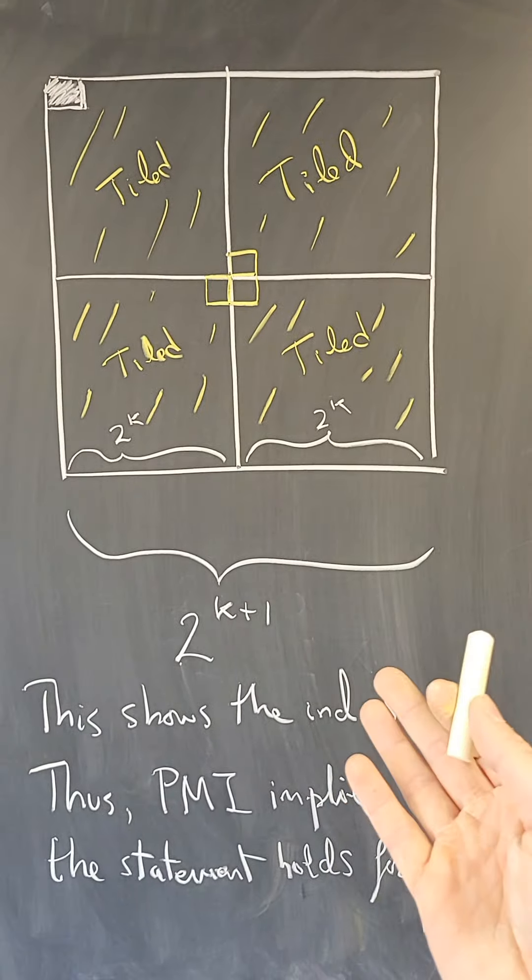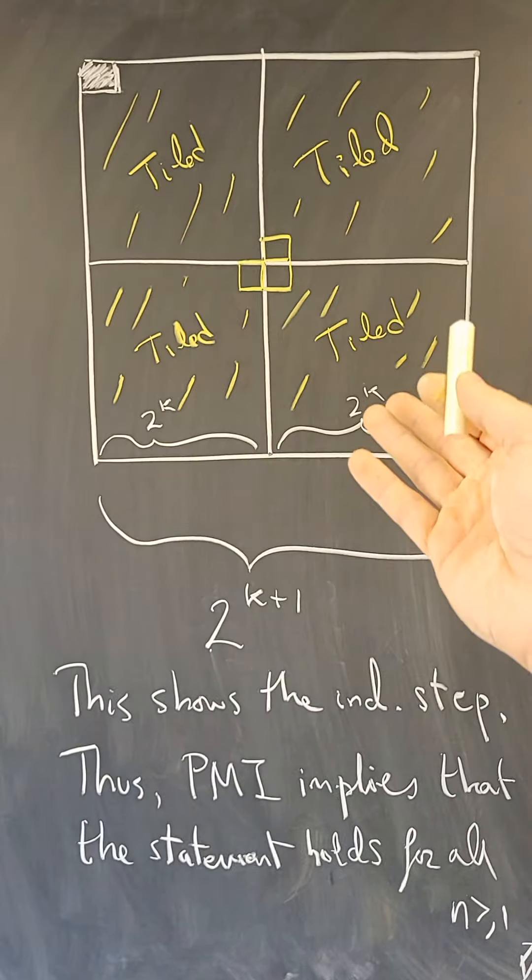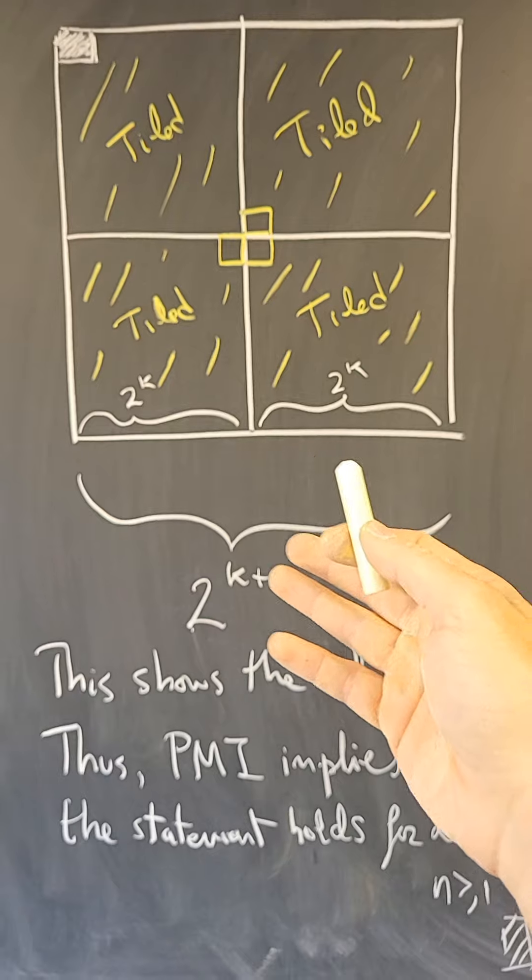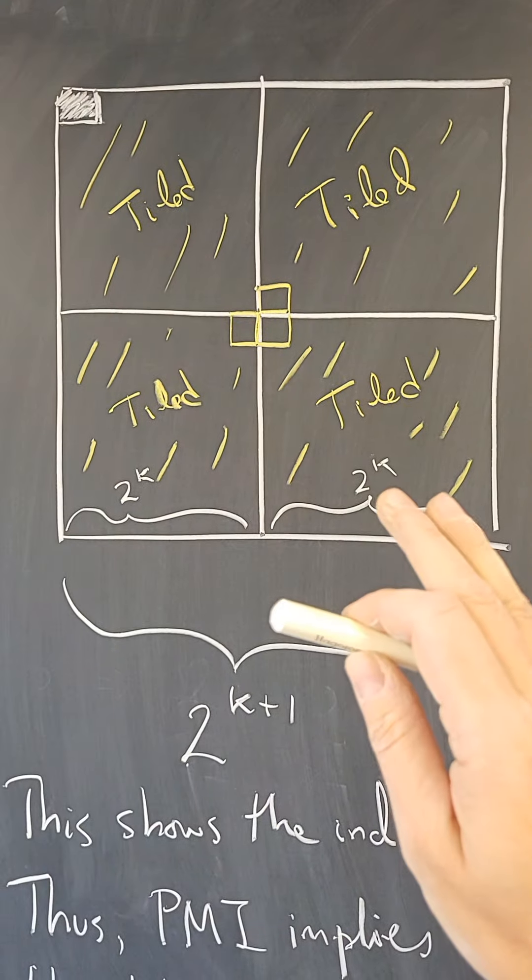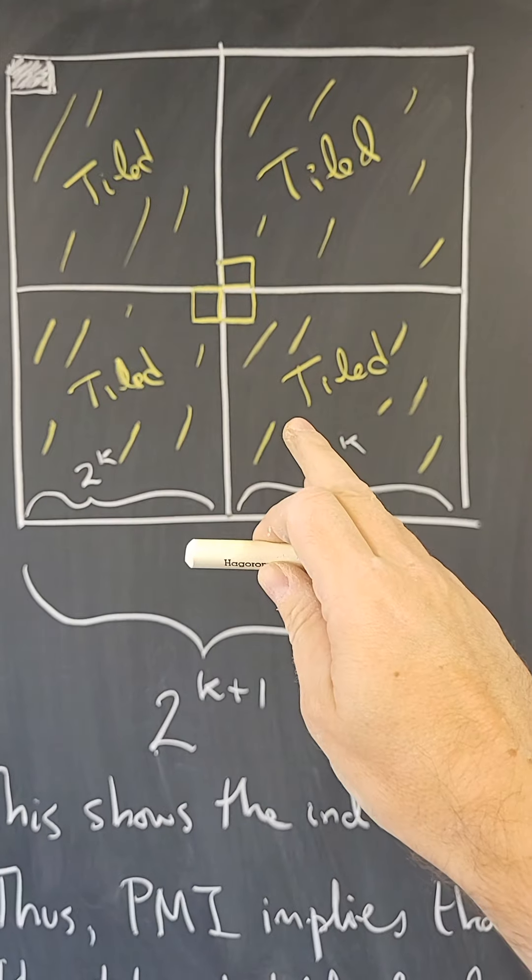But the interesting part is that the proof doesn't really tell me how to find such tilings. It just says that the tiling exists. What the proof does tell me, though, is that I can find those tilings recursively.